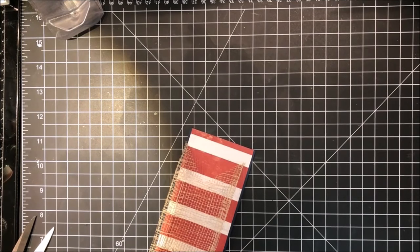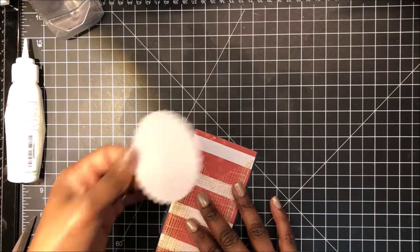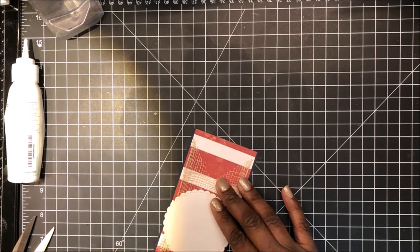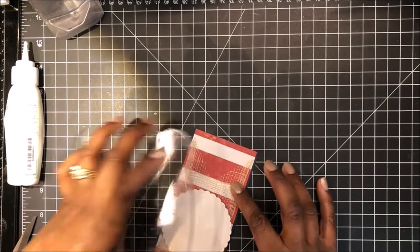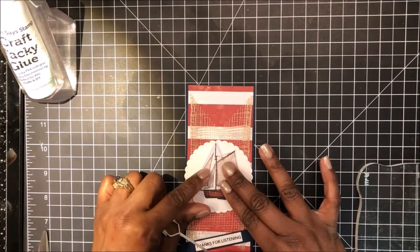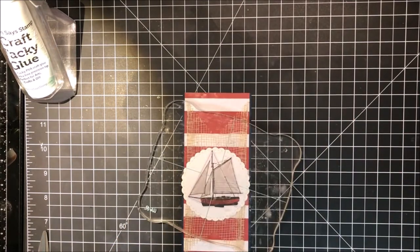And then I'm going to bring in my circle that is, my circle measures approximately two and three quarter inches and I will apply liquid adhesive to the back and then just place that onto the top of that panel with my burlap ribbon underneath. And I was really liberal in the center of that circle so that everything adheres. And I'm bringing in one of the boats from the nautical bits and have affixed that to my circle.